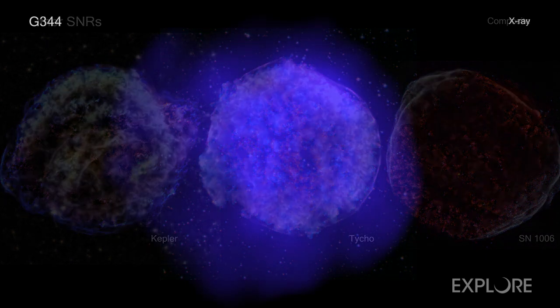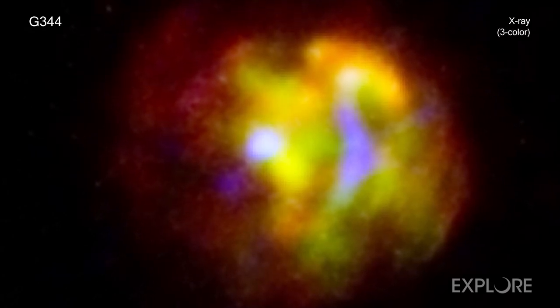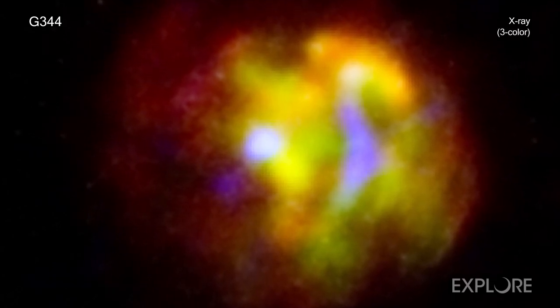By looking deeply at G344.7-0.1 with Chandra, astronomers have a window into an important phase later in the evolution of a Type Ia supernova remnant.